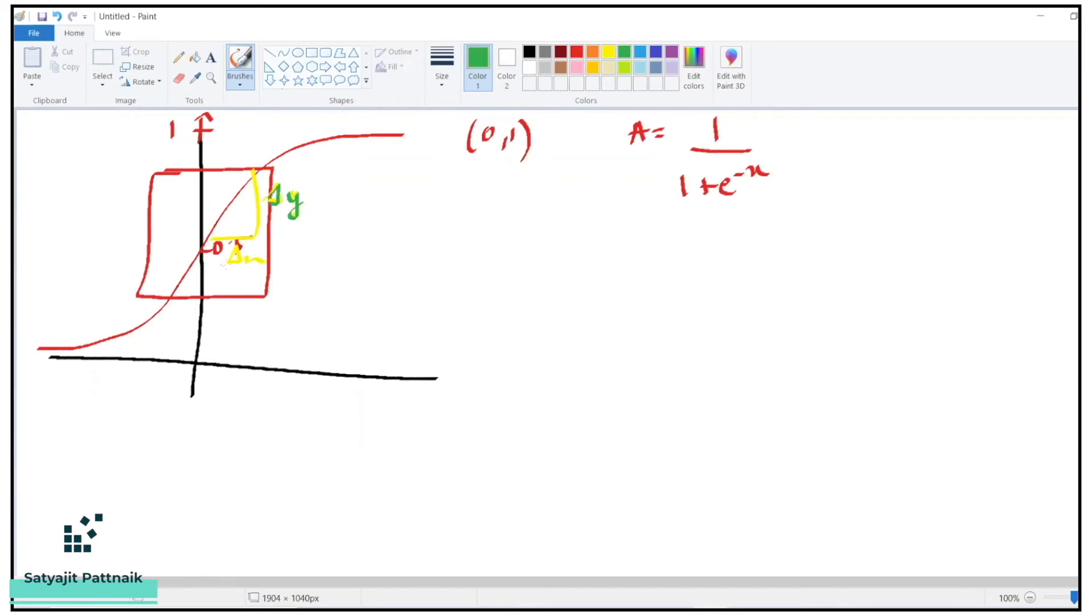Delta y is greater than delta x. That means my gradient is high in this area. What about this area? The gradient is low. We'll talk about that.